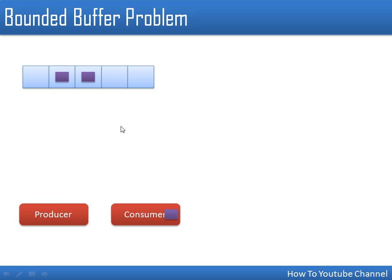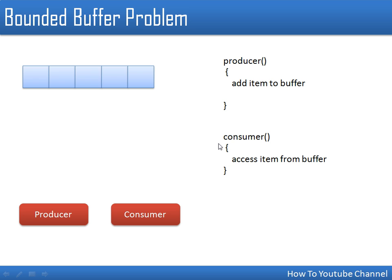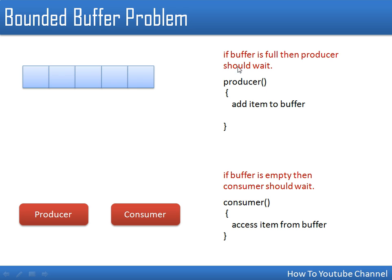When writing a solution for a synchronization problem using a monitor, to understand what type of condition variable you need, just think about why a process will wait — for which reason you want the process to wait — and those reasons you can take as conditional variables. So the producer will add an item to the buffer, the consumer will access an item from the buffer, and we impose the constraints: if the buffer is full the producer should wait, and if the buffer is empty the consumer should wait.